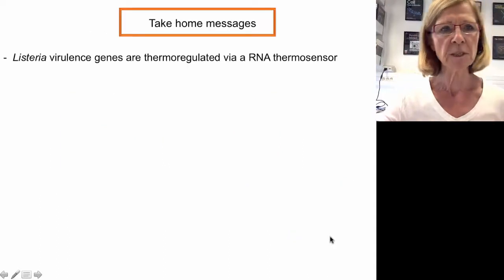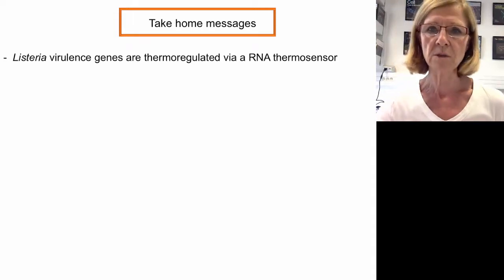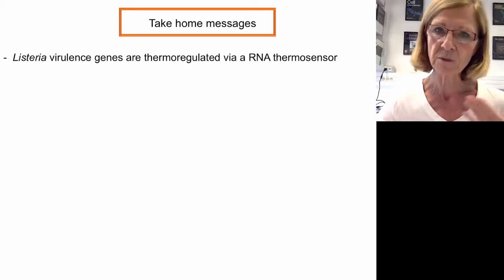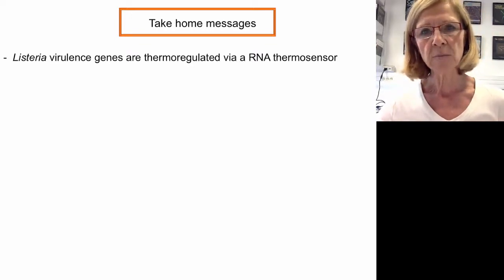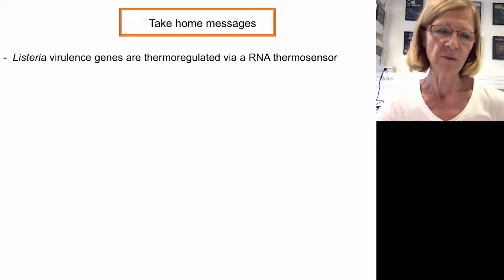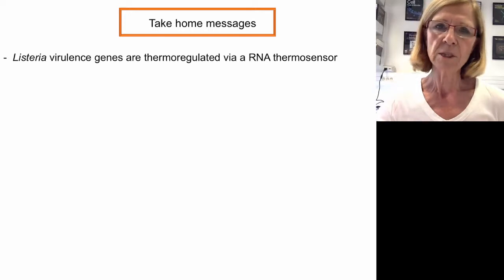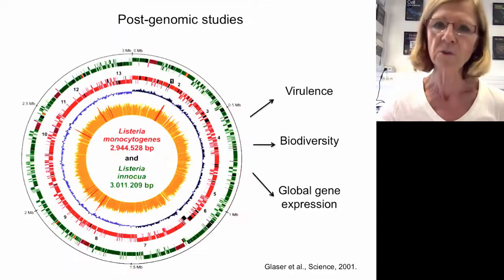At low temperature there is a stem-loop structure which opens at high temperature, allowing the Shine-Dalgarno sequence to permit ribosome binding, translation of the PrfA protein, and virulence gene expression. My first message is that Listeria virulence genes are thermoregulated by an RNA thermosensor, which has now been described also in Yersinia and Neisseria. When we discovered this RNA thermosensor, RNA was becoming recognized as very important, and we decided to focus some of our efforts on identifying non-coding RNAs.